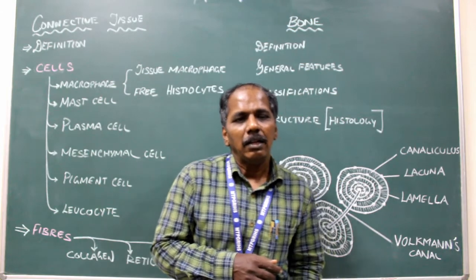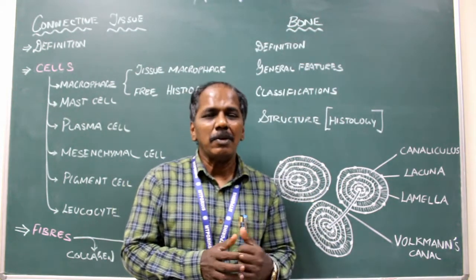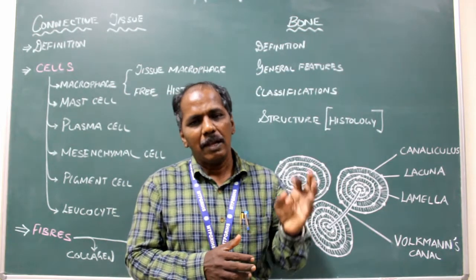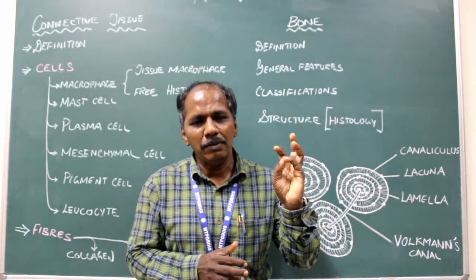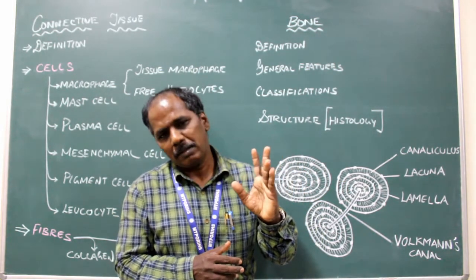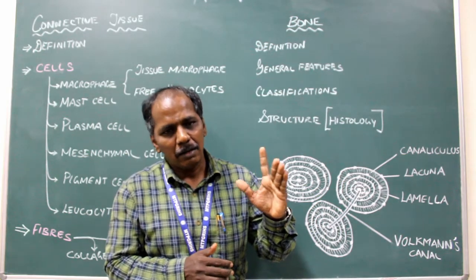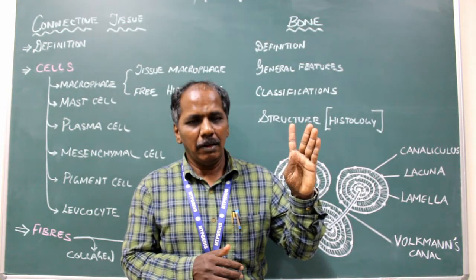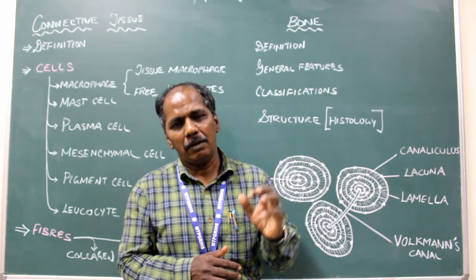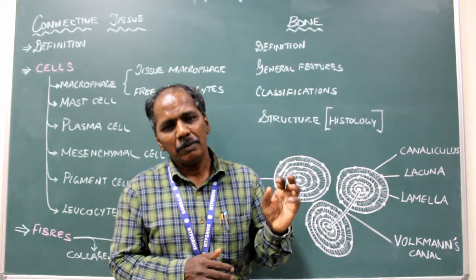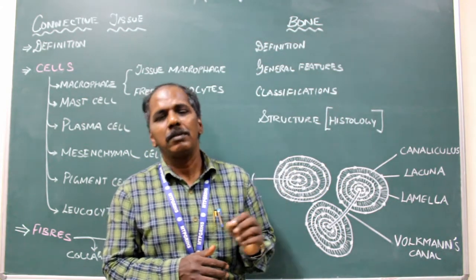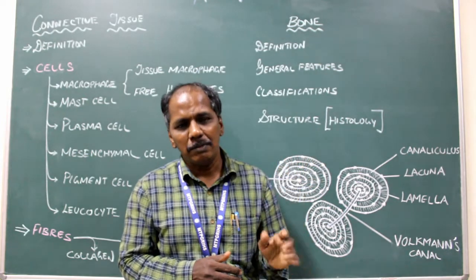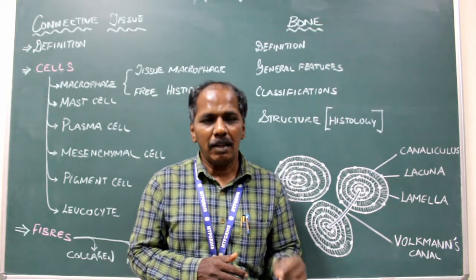Like the carpal bones, you have tarsal bones in the foot. There are seven tarsal bones: calcaneum (the heel bone), talus, navicular, three cuneiforms (medial, intermediate, and lateral cuneiform), and cuboid. There are also five metatarsal bones and fourteen phalanges.